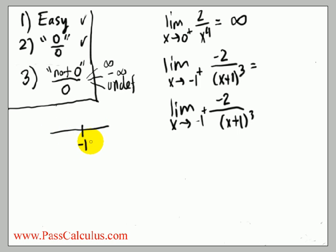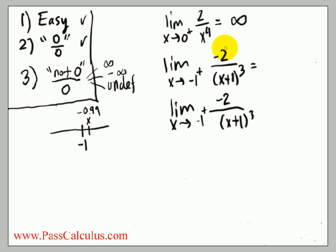For this one I'll draw it out to help visualize it. Here's negative one — we're taking x to be on the right of negative one. An example of a number that's really close to minus one but on the right-hand side might be something like negative 0.99. Negative 0.99 plus one gives a small positive number — about 0.01. If I cube a small positive number it's still a small positive number, even smaller. So really what I have is negative two divided by a small positive number, which is a big negative number. The answer is minus infinity.